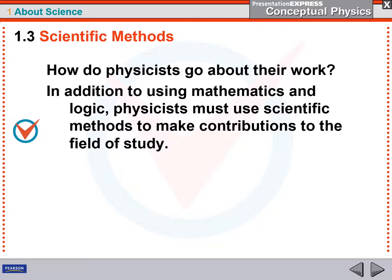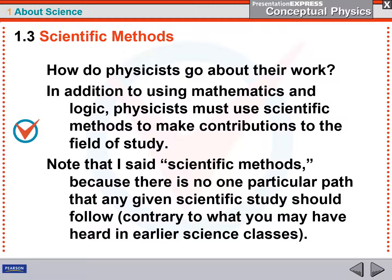So how do physicists go about doing their work? In addition to using mathematics and, of course, their brains to think things through, physicists have to use scientific methods. Other types of processes that I've already mentioned several, but please make a note that I said scientific methods.